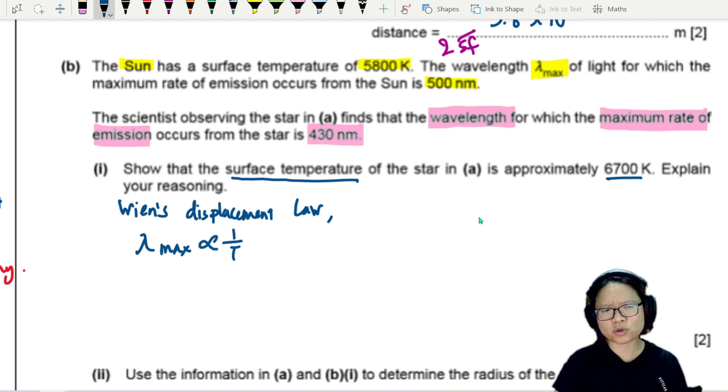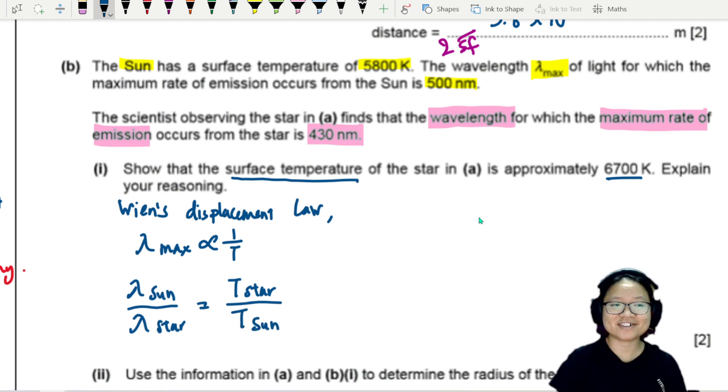This means the wavelength of the sun divided by the wavelength of our star will equal the temperature of the star, inversely proportional, divided by the temperature of our sun.